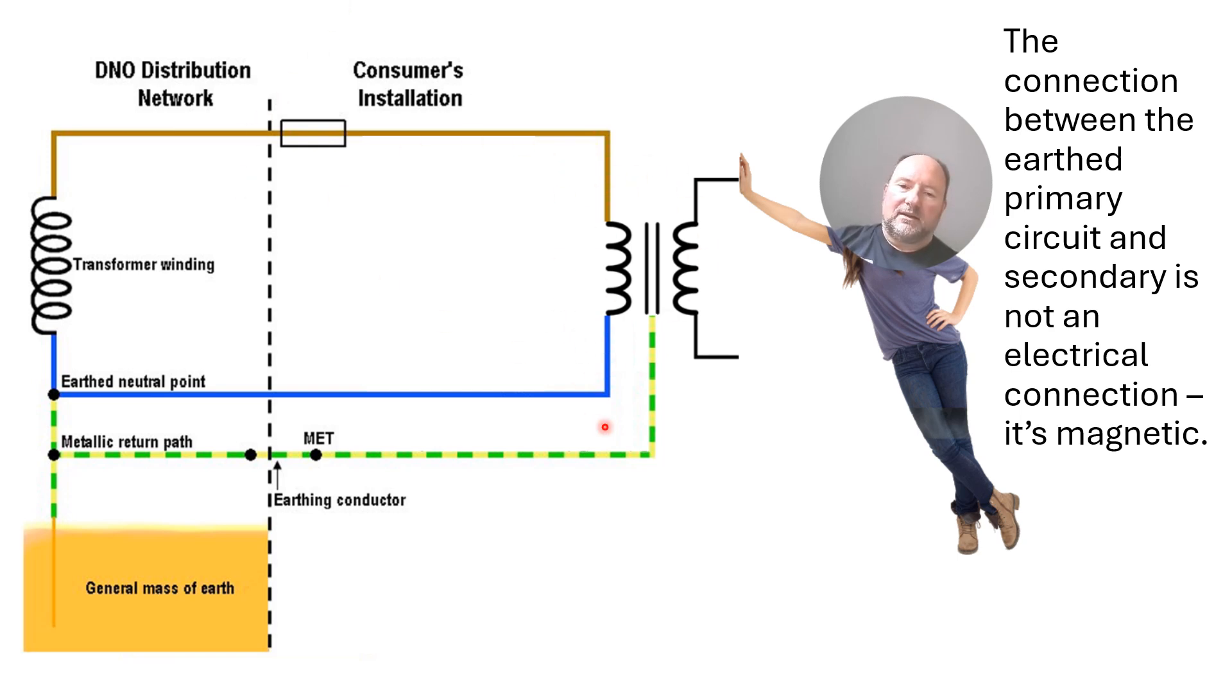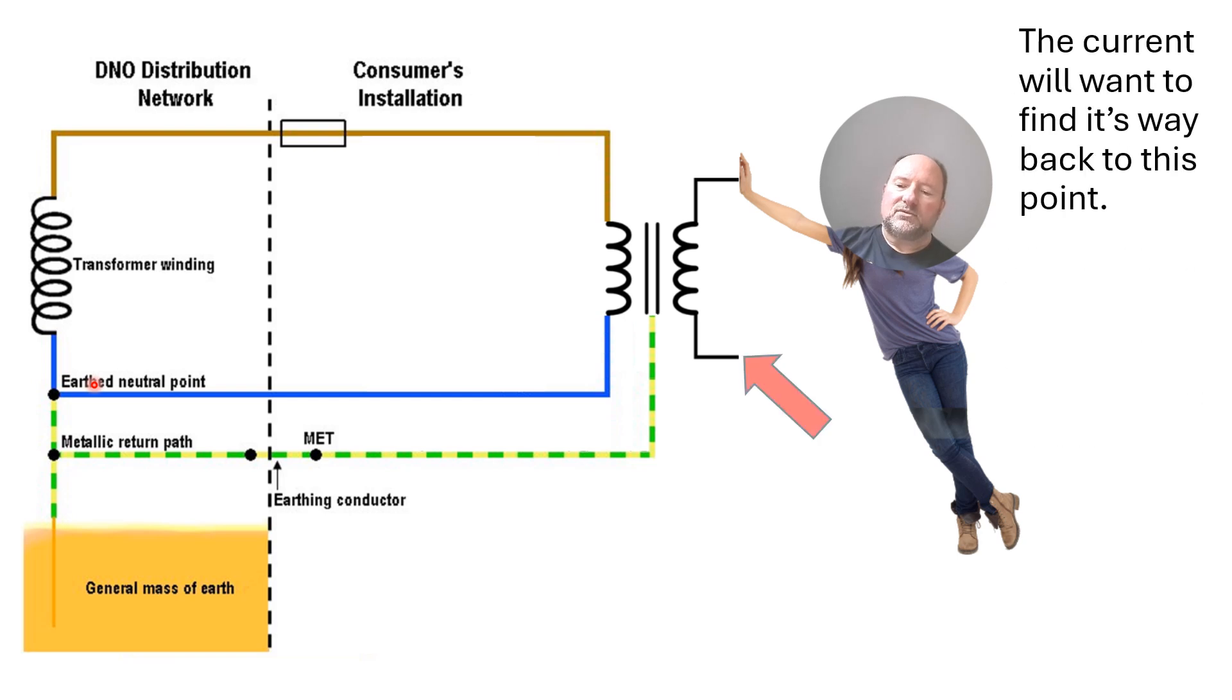Now, unlike the Earth system where it's going to try and find its way back to here, the Earth neutral point, current is flowing in that secondary winding is on its way back to here because it's across these two points where the actual source of energy is.